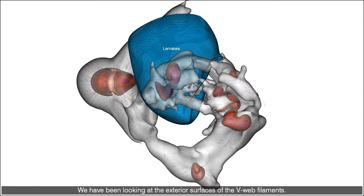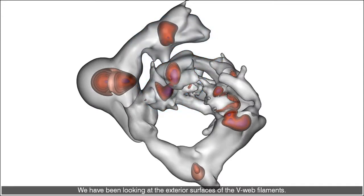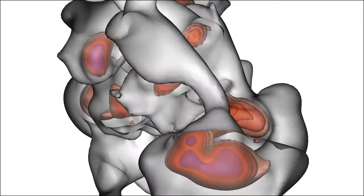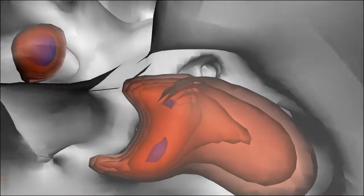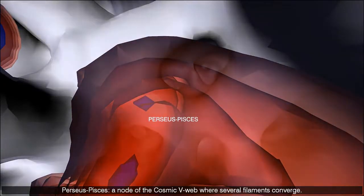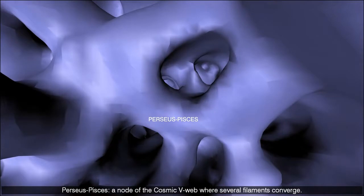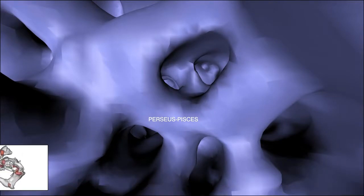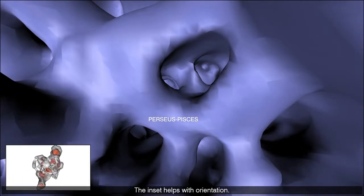We have been looking at the exterior surfaces of the V-web filaments. Let us go inside. Perseus Pisces, a node of the cosmic V-web where several filaments converge. The insert helps with orientation.